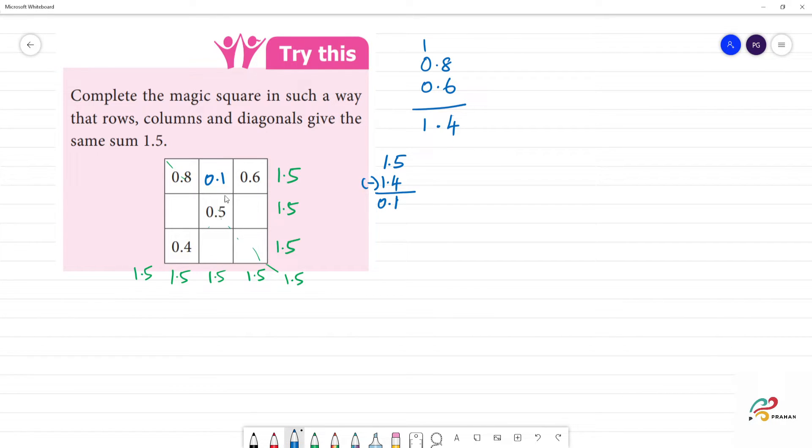Okay, now this is the same. So we have to add 0.1, 0.5, 0.6. Now we have 1.5 minus 0.6. 15, 15, 6, 9. So here we have 0.9.